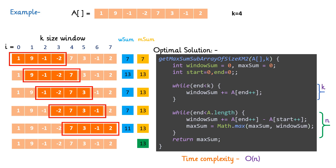I hope you got the idea how we used two pointer technique to solve this sliding window. Basically this technique was already used in the last tutorial itself but we were not aware of it. Those facing difficulty understanding what I have done for this sliding window, I highly recommend please go and watch that tutorial first, then it will be easy to understand this.